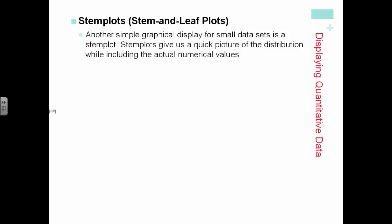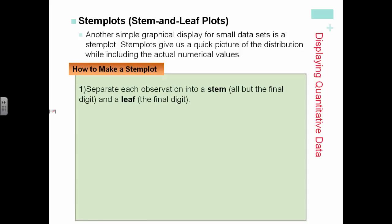Stem and leaf plots are another way for us to graphically display small data sets. To make a stem plot, we separate the observation into a stem, which is all but the final digit, and a leaf, the final digit.